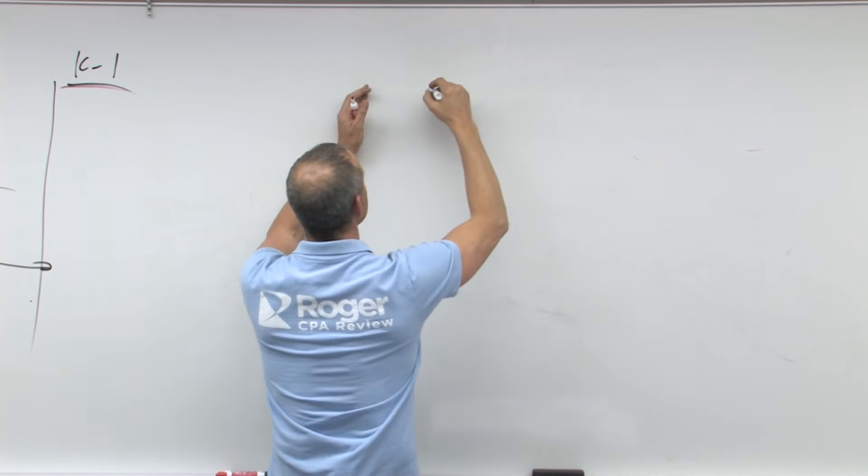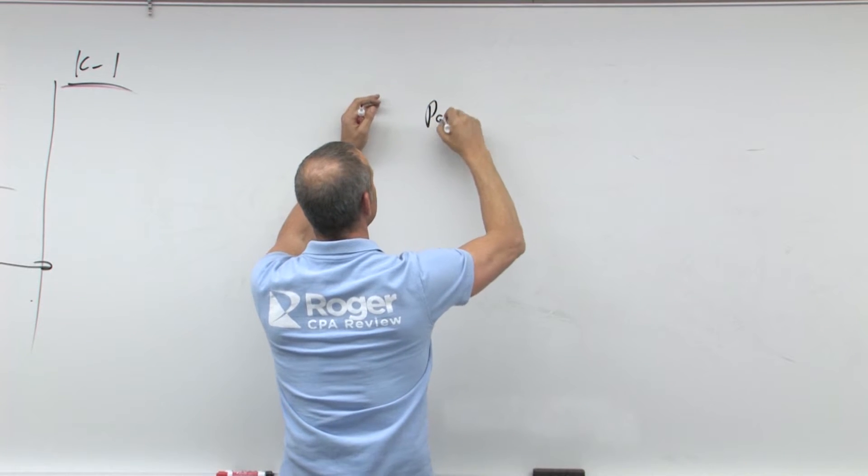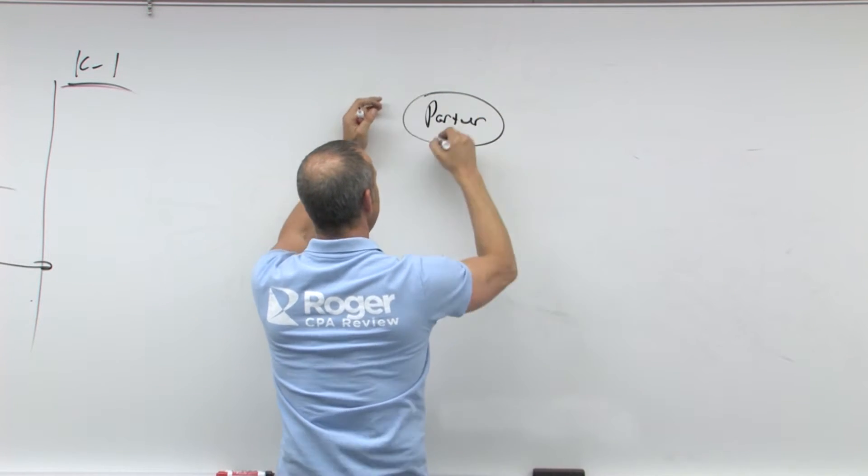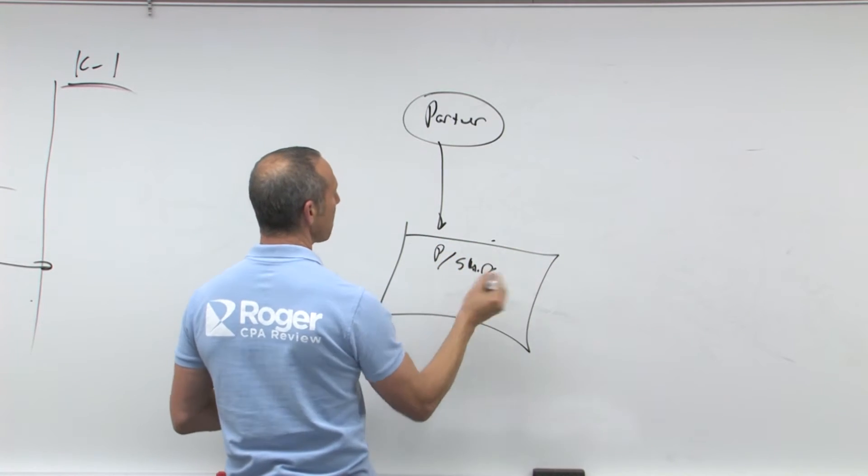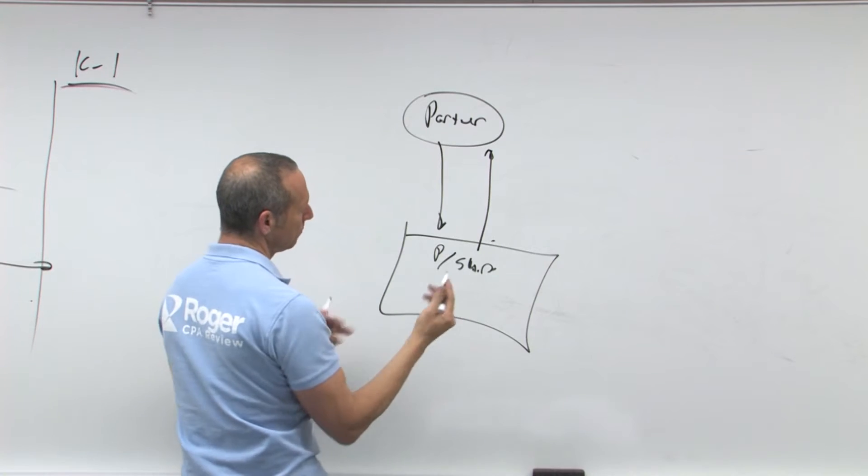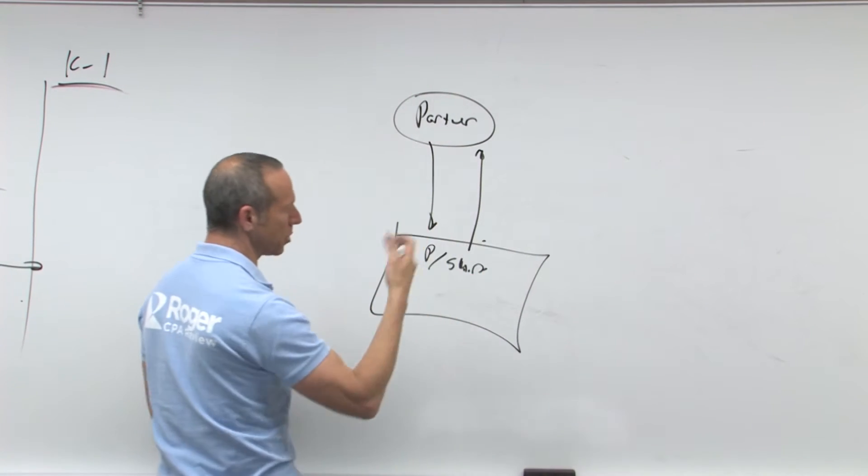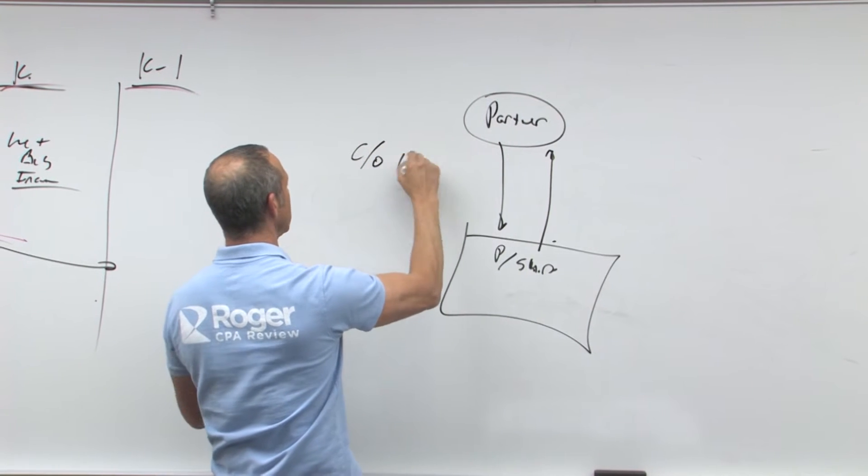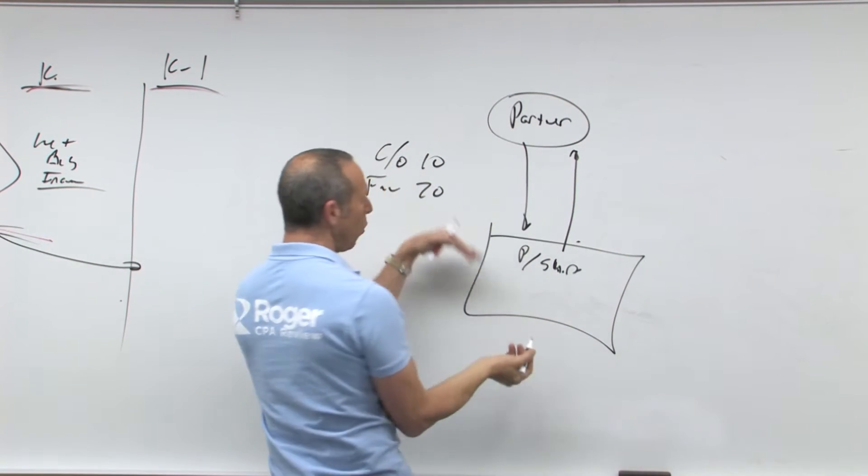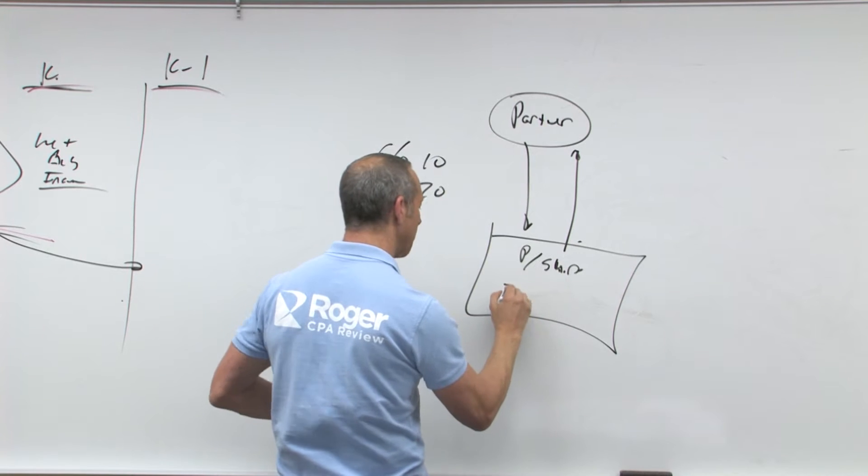So we've got here, this is the partner, and remember, I'm putting an asset into the partnership. Then I take my share out. In other words, I own one third, or 50%, or 20%. So let's say I take an asset, carry over basis 10, fair market value 20, I put it in. What is it? Carry over basis. So they pick it up at 10.